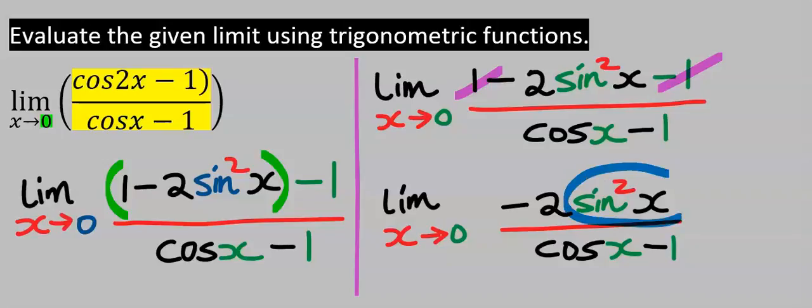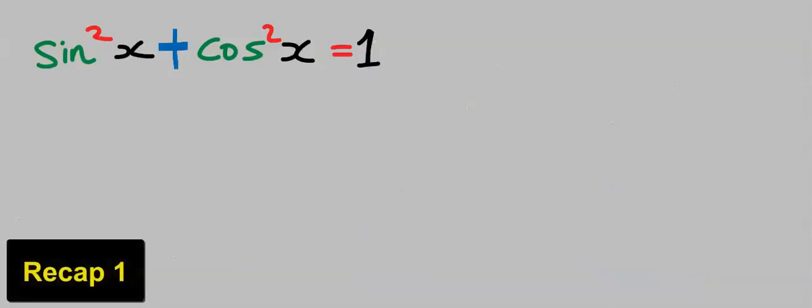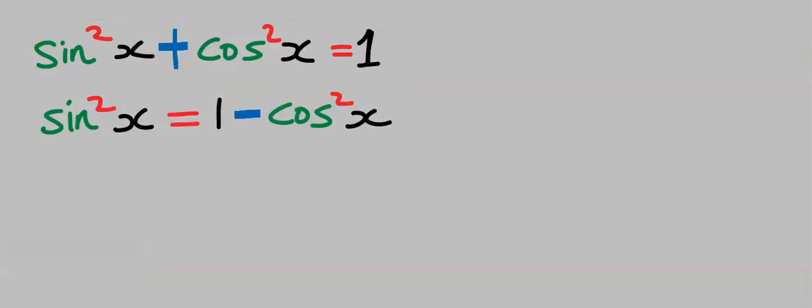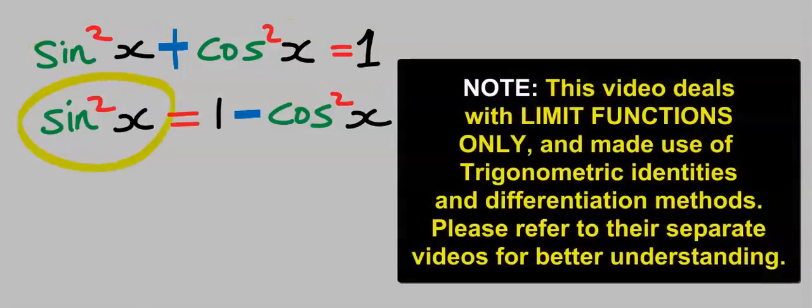Let's recap that from trigonometric function, sine squared x plus cos squared x is equal to one. Let's make sine squared x the subject by taking cos squared x across the equal sign.